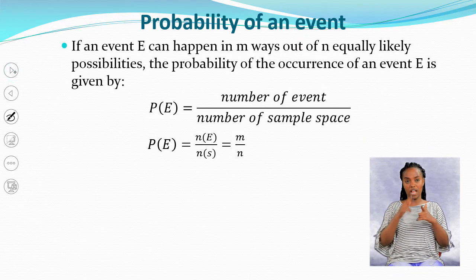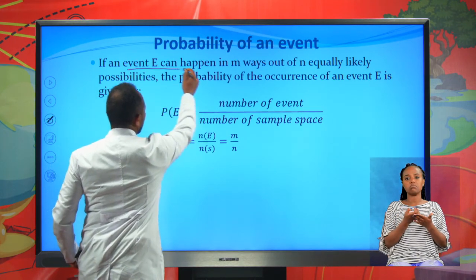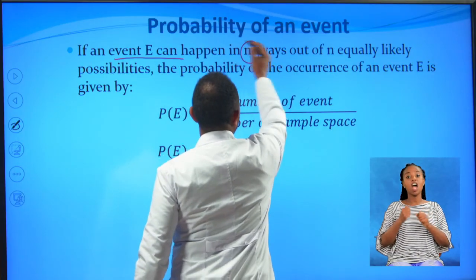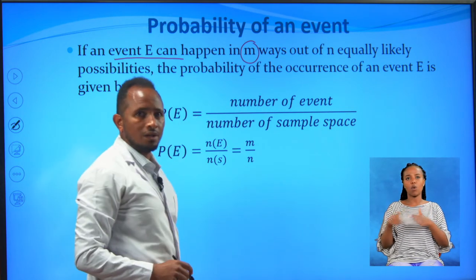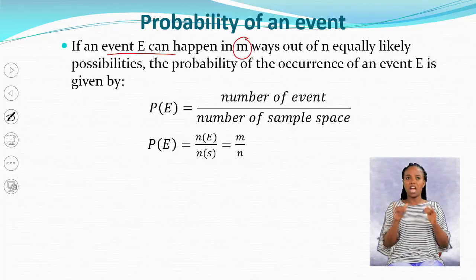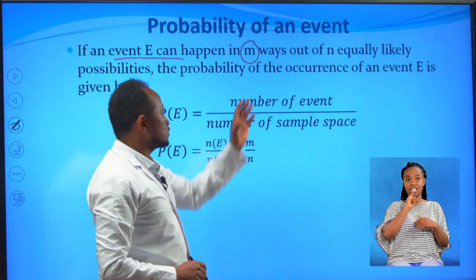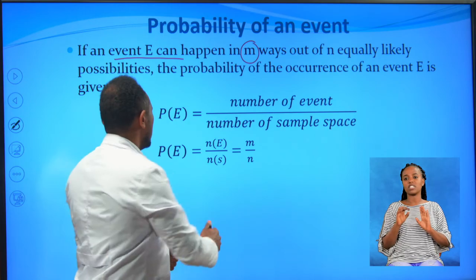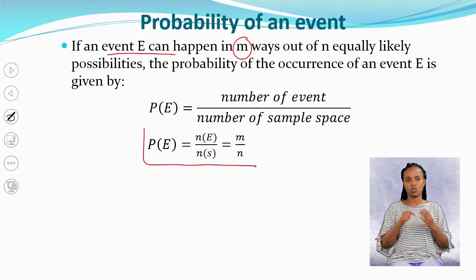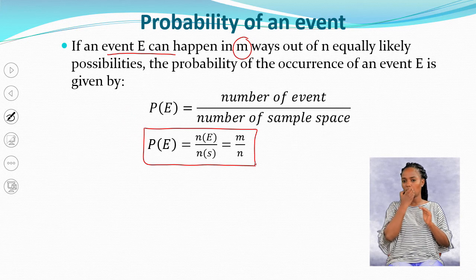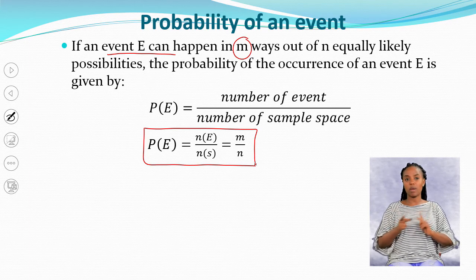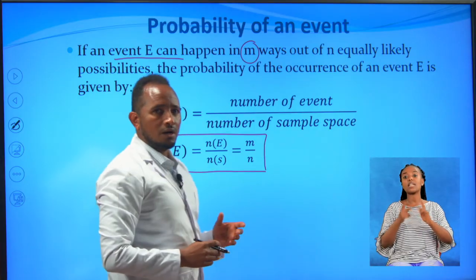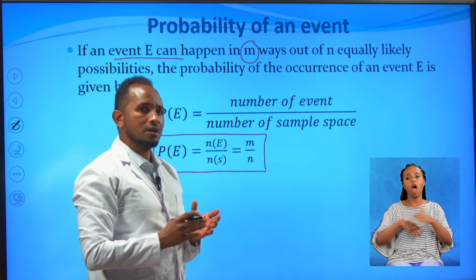If an event E can happen in M ways out of equally likely possibilities, the probability of the occurrence of an event E is given by: probability of event equals number of favorable outcomes divided by number of sample space, or P(E) = M divided by the number of sample space. The sample space is the total possible outcomes under the experiment.